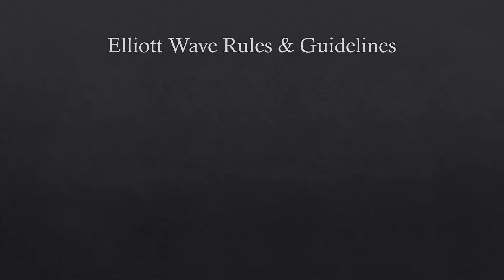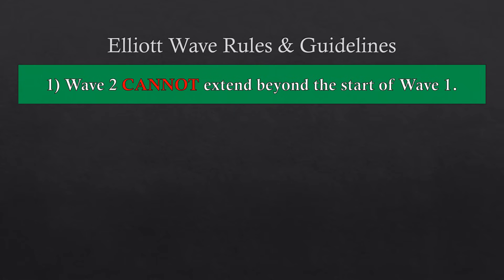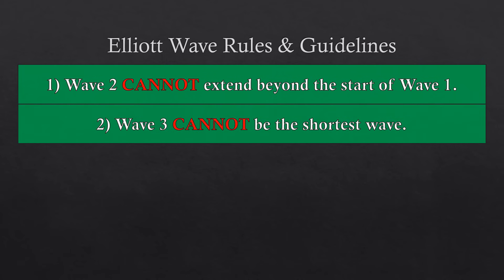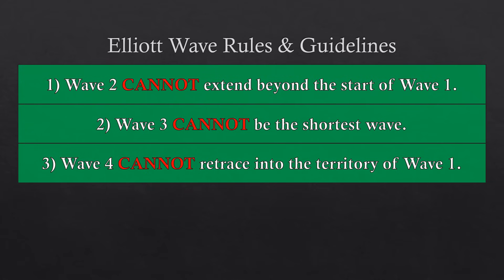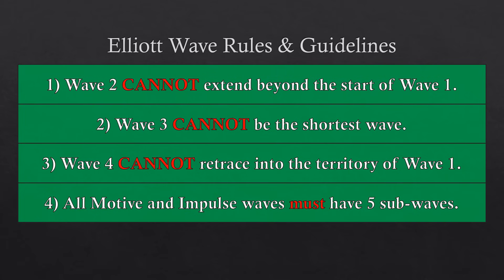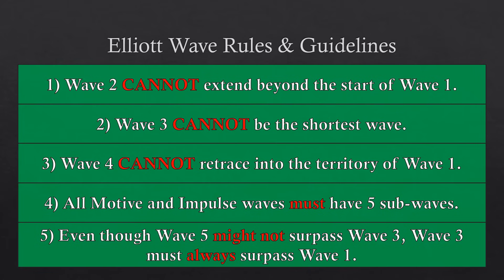The Elliott Wave Theory has different rules and guidelines. Rules cannot be broken — otherwise the wave count is discarded. Guidelines are more flexible. Rule one: wave two cannot extend beyond the start of wave one. Rule two: wave three cannot be the shortest wave. Rule three: wave four cannot retrace into the price territory of wave one. Beyond these, all motive and impulse waves must have five subwaves, and wave three must always surpass wave one even if wave five does not surpass wave three.